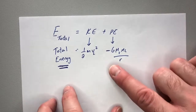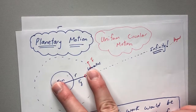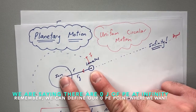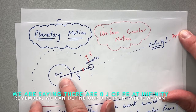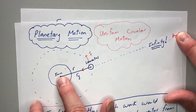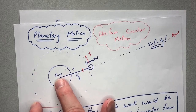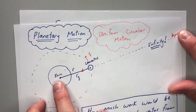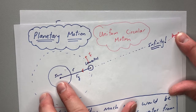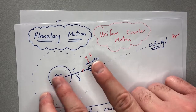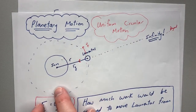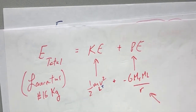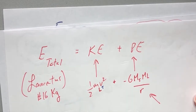The potential energy is negative because at infinity, we define the potential energy of Laurentiis relative to the sun as zero. So if you're closer than infinity, it's negative potential energy relative to that point. Think of it this way: if you're really far from a friend, you don't notice them. The same with this planet — if they're infinitely far away, they have zero potential energy, which means at a closer distance the potential energy is negative. Total energy is always KE plus PE, and for planetary stuff PE is not MGH.